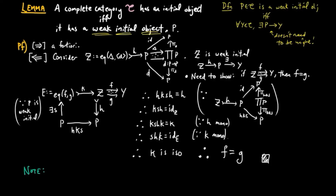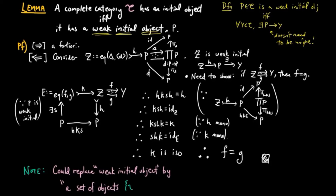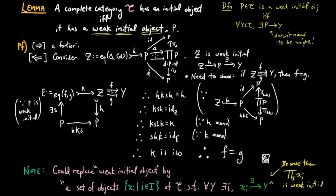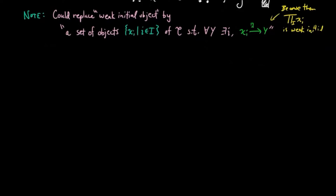Note that we could have replaced the phrase 'weak initial object' in the lemma by a set of objects XI indexed by some set I of C, such that for all objects Y there exists an index I and a morphism from XI to Y. That's because, since C is assumed to be complete and has products, we take the product of these objects XI, and by pre-composition by projections, the product of the XIs is a weak initial object. This connects us from the lemma to the proof of the general adjoint functor theorem. We're really looking at the category X over G and not C, so we should translate the idea of a set of objects in C to a set of morphisms.